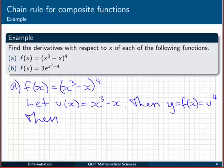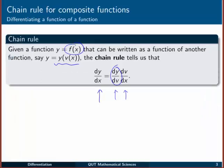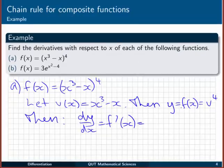Then by the chain rule, we've got that dy/dx, or f' of x, is equal to dy/dv times dv/dx. Now dy/dv is pretty simply just 4 times v to the 3, and then dv/dx is going to be 3x squared minus 1.